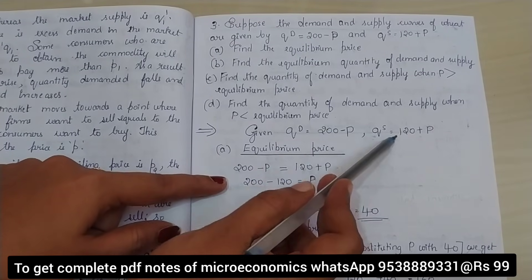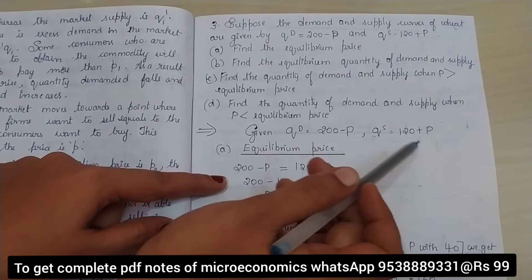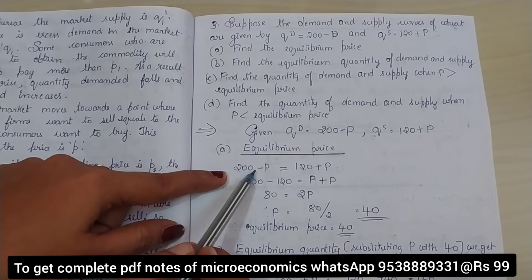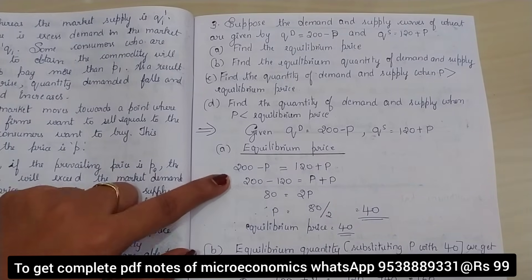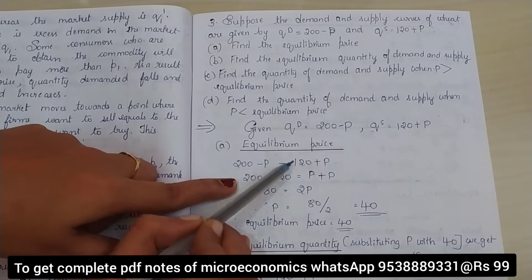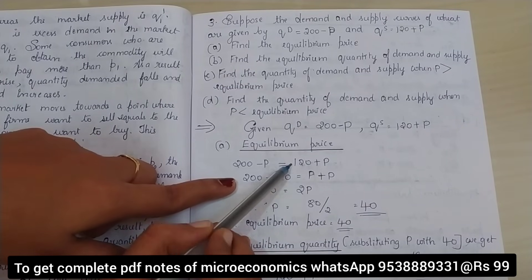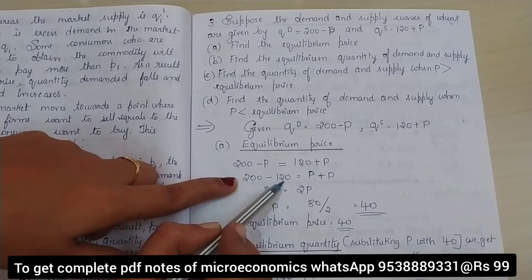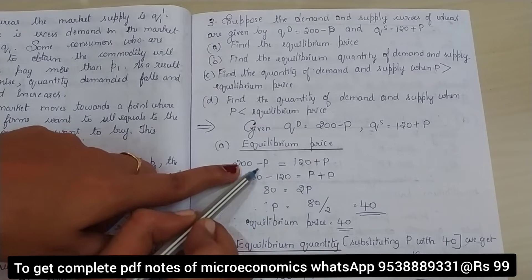What we do is, we have these two equations: 200 minus P and 120 plus P. We equate these two equations. That is, 200 minus P is equal to 120 plus P. Now we get the P value, which itself is our equilibrium price. So how do we solve the equation? 200 is on this side. When you bring 120 to the other side of the equal sign, it becomes minus 120.